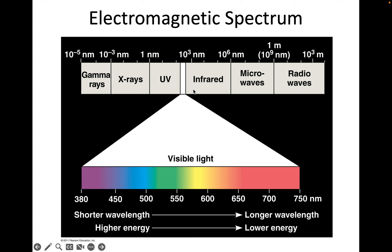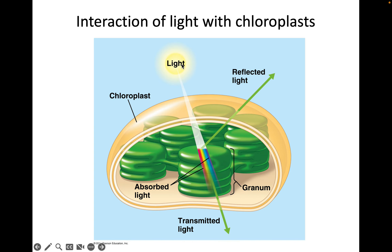Infrared cameras depict heat — heat is the next level on the spectrum that our eyes can't detect, though our bodies can sense it. To the left, at shorter wavelengths than visible light and at higher energy, are ultraviolet radiation. You can't see UV light — some animals like honeybees and birds of prey can — but we know it's there when we get sunburned. The light from the sun interacts with the chloroplast, and the chlorophyll specifically responds to certain wavelengths in the visible spectrum.